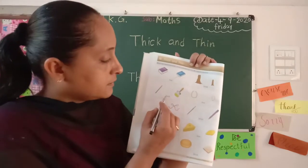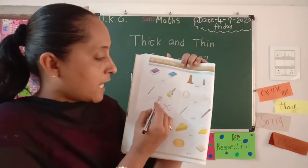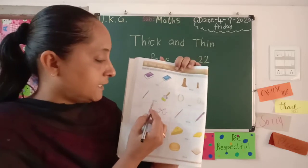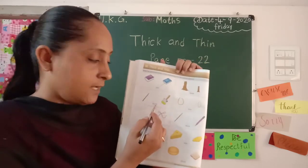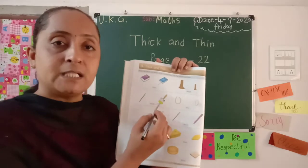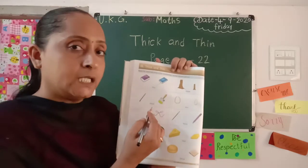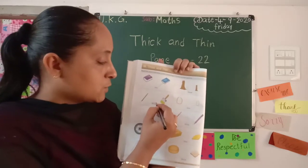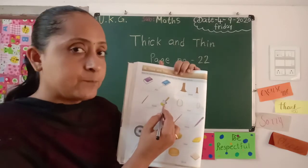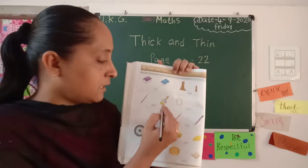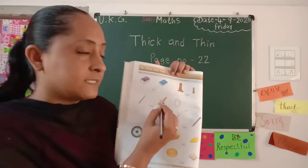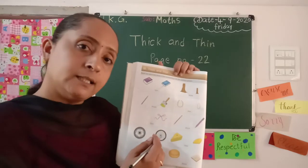Next. T-H-I-C-K thick. Thick yani zyada. In dono pictures mein se phunsa picture thick hai? Us pe hume aise tick karna hai. Yeh hai — yeh brush. Is pe hume aise tick karenge.